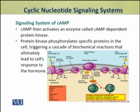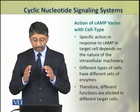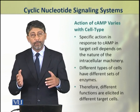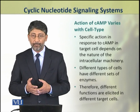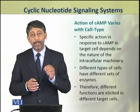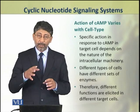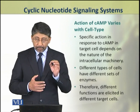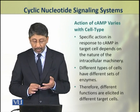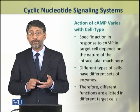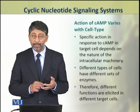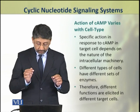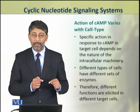This creates a cascade of biochemical reactions. There are various hormones which produce cyclic AMP, but this same cyclic AMP acting as a second messenger causes different types of actions in different types of cells. These specific types of reactions depend on the different types of intracellular machinery and enzyme combinations present in different types of cells. Thus, different functions are elicited by different target cells.